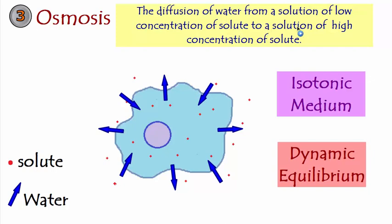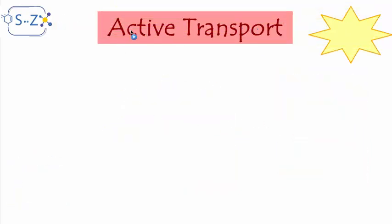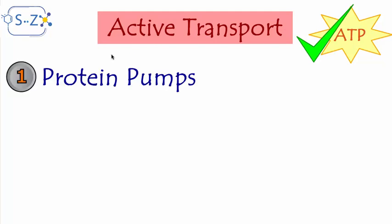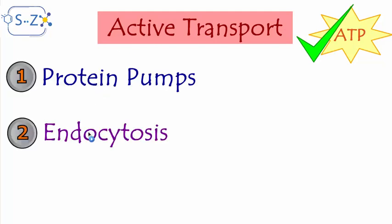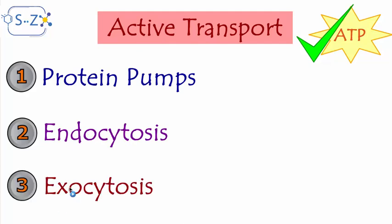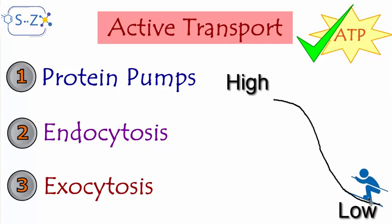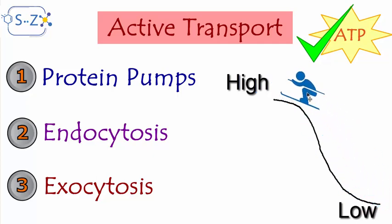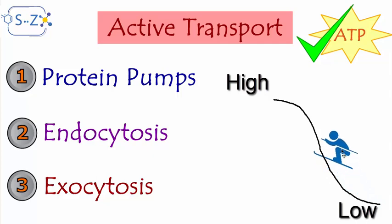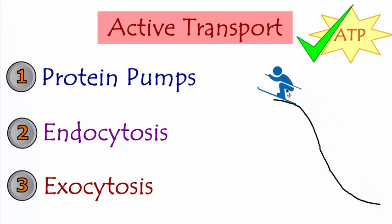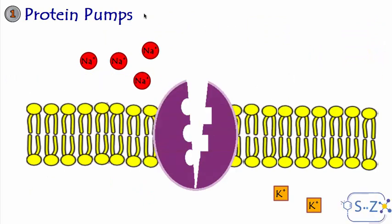Now let's talk about active transport, which needs ATP — it needs energy. The types of active transport are protein pumps, endocytosis, and exocytosis. This type of transport needs energy because molecules are moving against the concentration gradient — from low concentration to high concentration. Like a skier going uphill, they need a lot of energy. Let's start with protein pumps — the protein pump looks like a protein channel or carrier, but it needs energy.